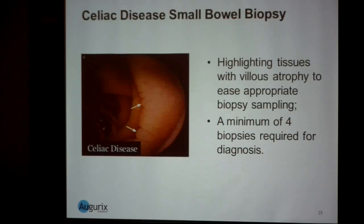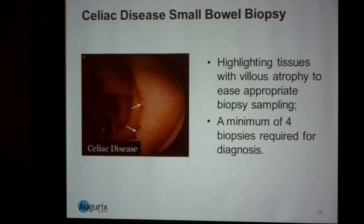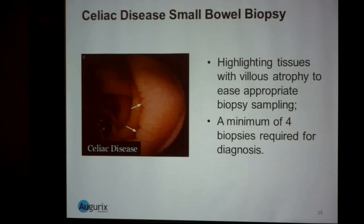Finally, and I'm ending with this because it is where we come from — celiac disease. It is quite a hurdle to really be able to pick up the villous atrophy lesions within endoscopies. The current guidelines say that a minimum of four biopsies are required to truly diagnose celiac disease, and it's not always done. If we could have a tool that really guides appropriate biopsies, I think that would really make a difference in the diagnosis of this disease.